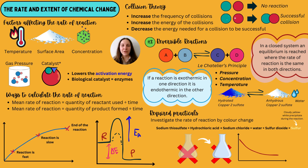Let's talk about the first topic: the rate and extent of chemical change. A rate of reaction is how quickly a reaction happens in a given time frame. In an industrial process like the Haber process that produces ammonia used as a fertiliser, that process needs specific conditions to get the best yield and the highest amount of product, making it economically valuable. Factors that increase the rate of reaction include temperature, surface area, concentration, gas pressure, and catalysts.